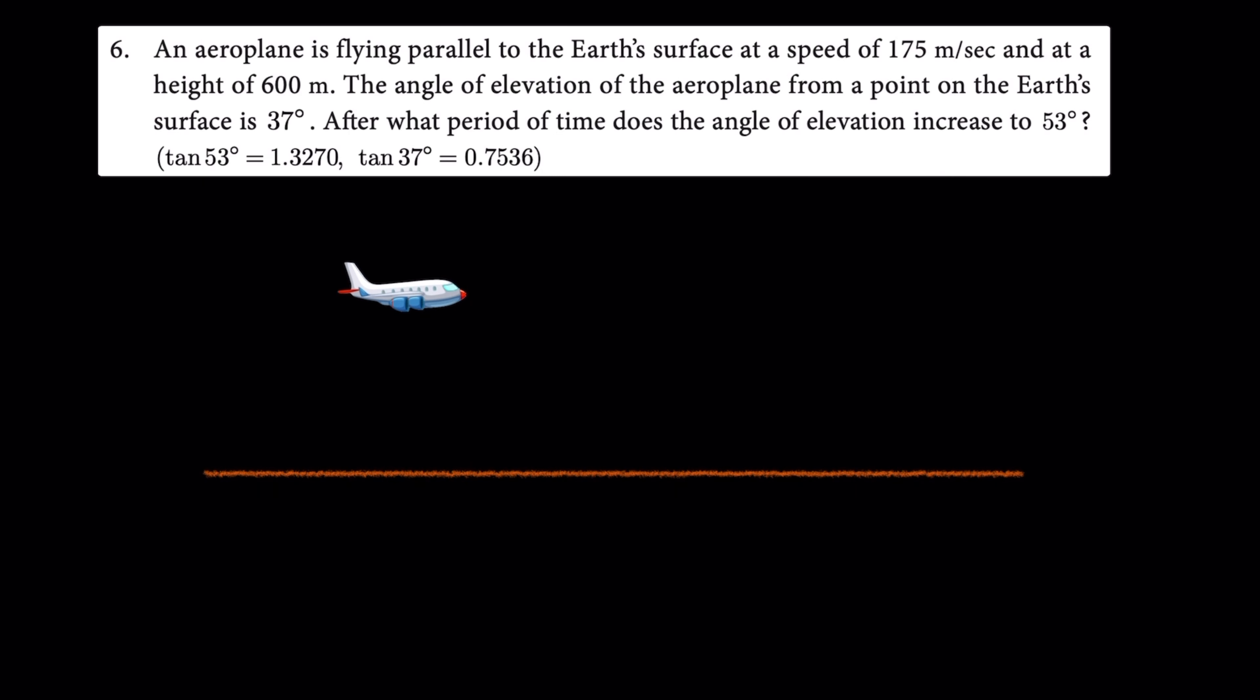An aeroplane is flying parallel to the earth's surface at a speed of 175 meters per second at a height of 600 meters. The angle of elevation of the aeroplane from a point on the earth's surface is 37 degrees.